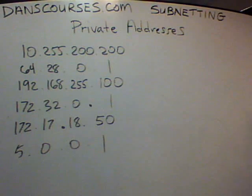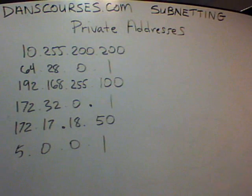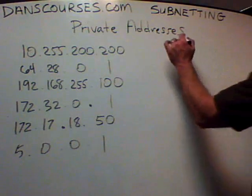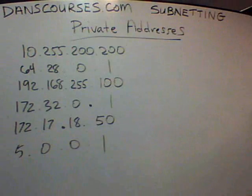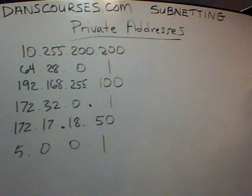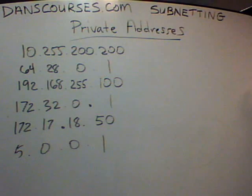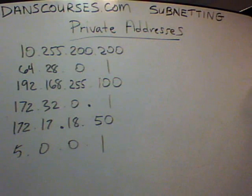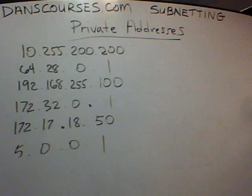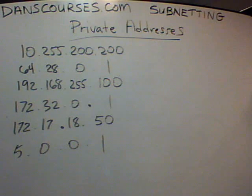Which of these addresses are private IP addresses — meaning they're not routable on the internet? You have to be able to answer this question on the test, the certification exam. They'll give you a choice of five, six, or seven addresses and you've got to pick out the private ones. Do you see any that you know are private?